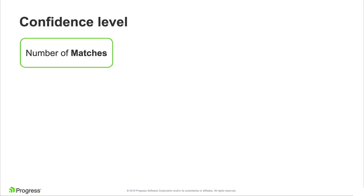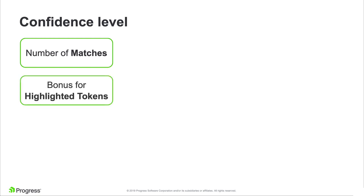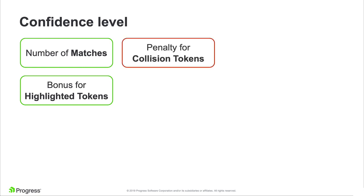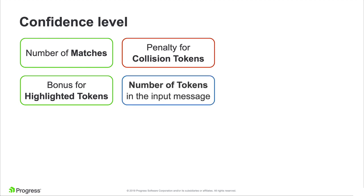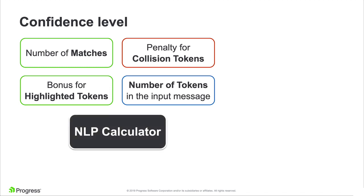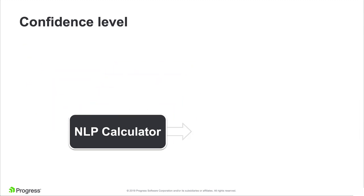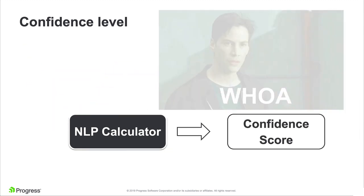NLP doesn't just choose the most probable expression that matches what the user is saying — it also provides us with a confidence level. If we look at the model and what was matched, we consider: the number of matches, a bonus for highlighted tokens, a penalty for the collision tokens that were in common between the two sets, and the total number of tokens provided. If we take all of this information and put it into the NLP calculator, we get a confidence score.